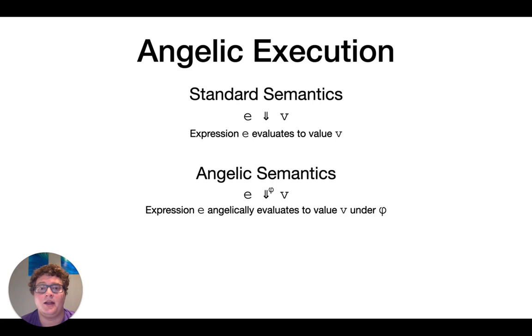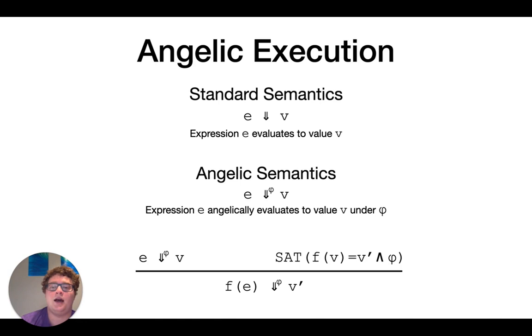In angelic semantics, we parameterize this with phi, which says that expression E angelically evaluates to V under phi. Now what we do is we change the recursive call semantics, where before we had fixed points and things like that. Now we have that basically we need the recursive call to be consistent with this specification. So if it's the case that the recursive call is consistent while returning some V prime, we can return that V prime.